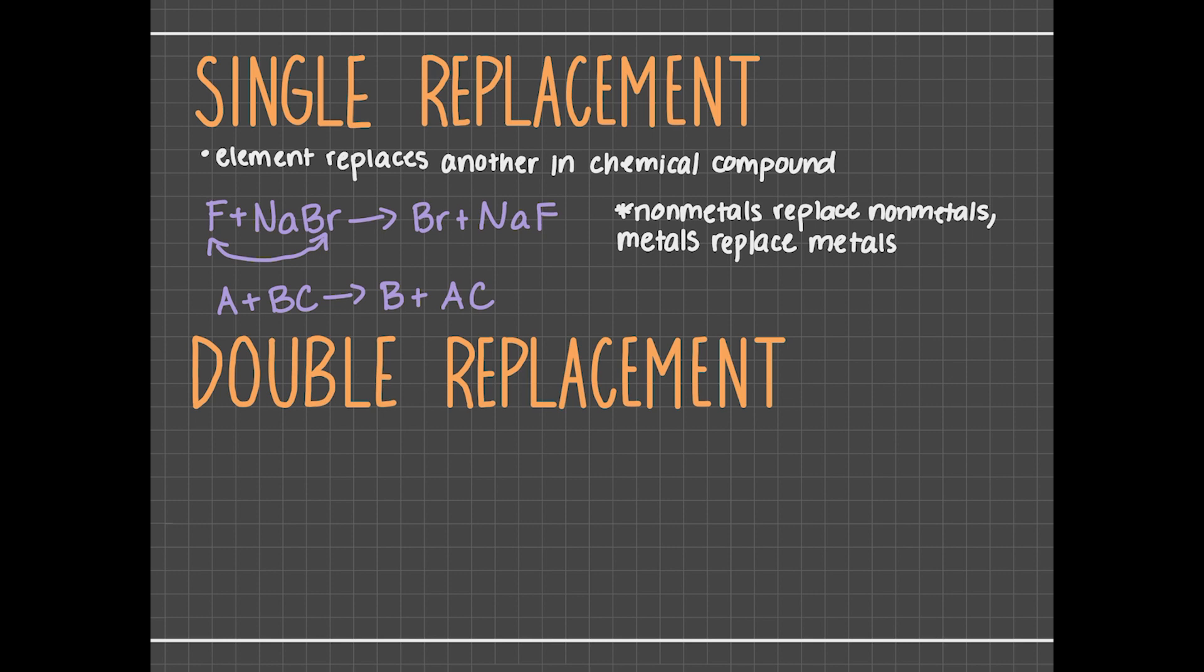The last reaction we'll cover is the double replacement reaction. A double replacement reaction occurs when two elements replace each other in their compounds. And just like single replacement reactions, metals will replace metals and nonmetals will replace nonmetals. For example, when KOH and Mg(NO3)2 are reacted, K and Mg replace each other, forming the new compounds KNO3 and Mg(OH)2.